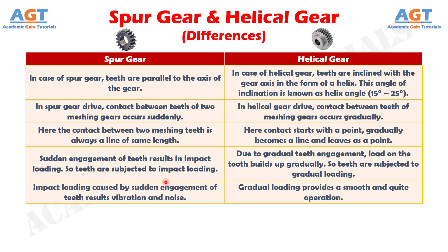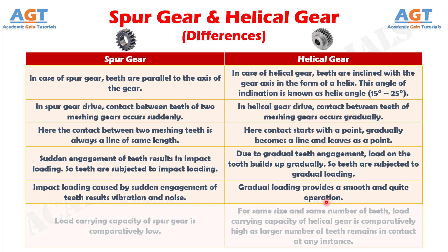Difference number 5: In spur gear drive, impact loading caused by sudden engagement of teeth results in vibration and noise, whereas in helical gear drive, gradual loading provides a smooth and quiet operation.